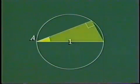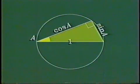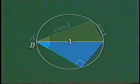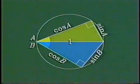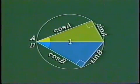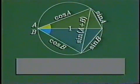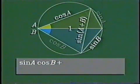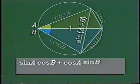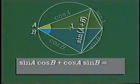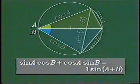Start with a circle of diameter 1. Take angle A and form a right triangle — the lengths of its legs are sine A and cosine A. Use angle B to form another right triangle — the lengths of its legs are sine B and cosine B. The two triangles together form a quadrilateral inscribed in a circle, with one diagonal being a diameter of length 1. The length of the other diagonal is the sine of A plus B. Now apply Ptolemy's theorem: the product of the lengths of these two opposite sides plus the product of the lengths of these two opposite sides equals the product of the lengths of the diagonals. Presto! The addition formula for sines.